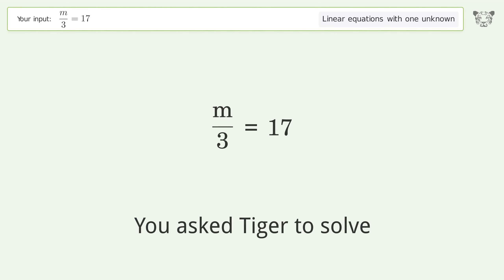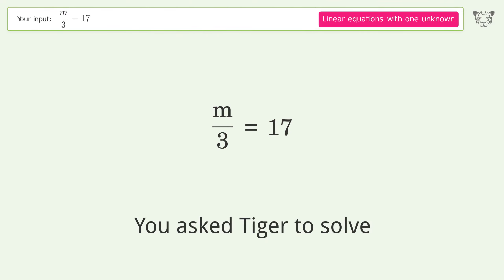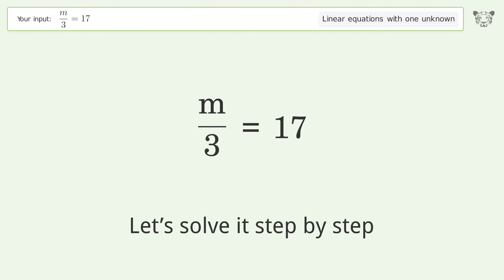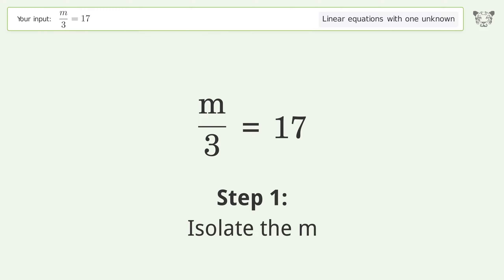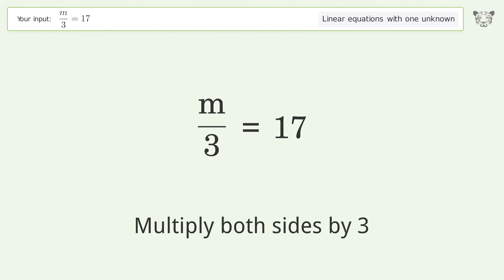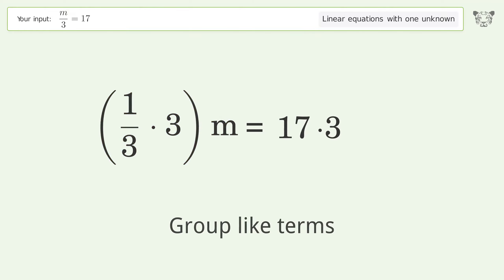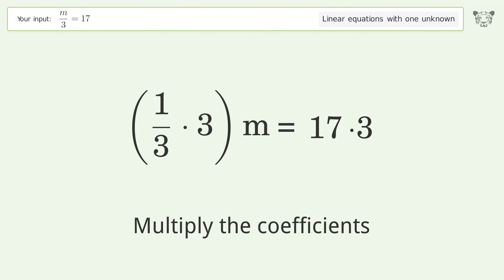Tiger is asked to solve a linear equation with one unknown. The final result is m equals 51. Let's solve it step by step: isolate m, multiply both sides by three, group like terms, and multiply the coefficients.